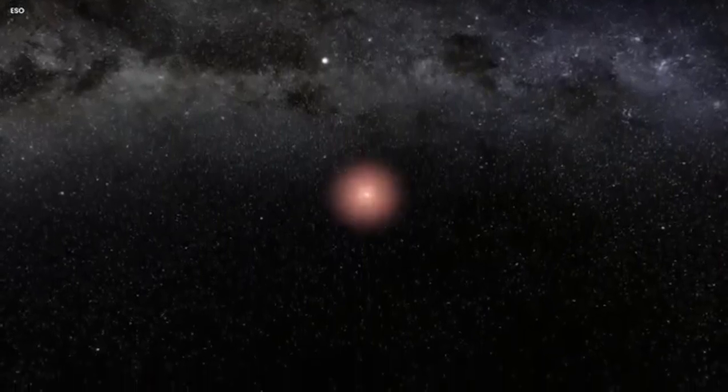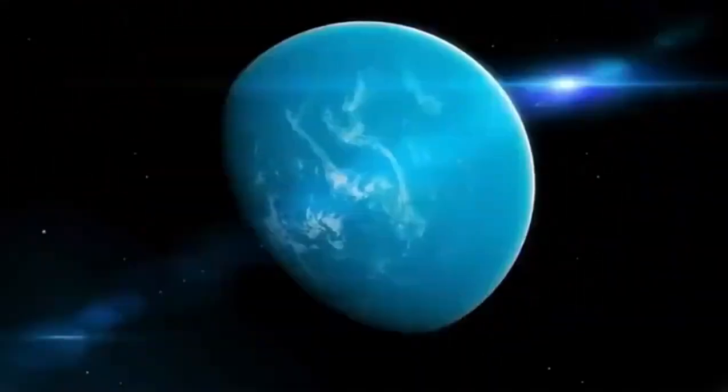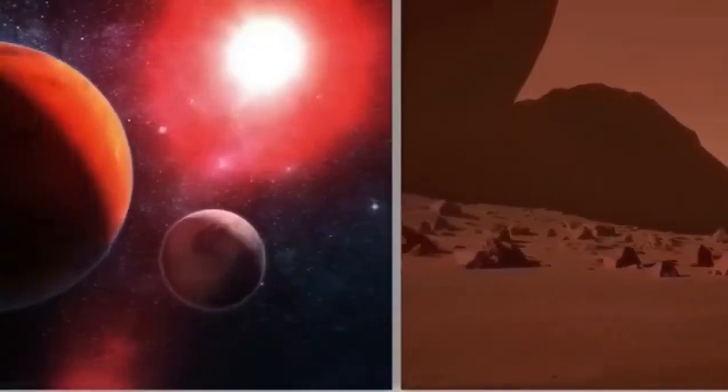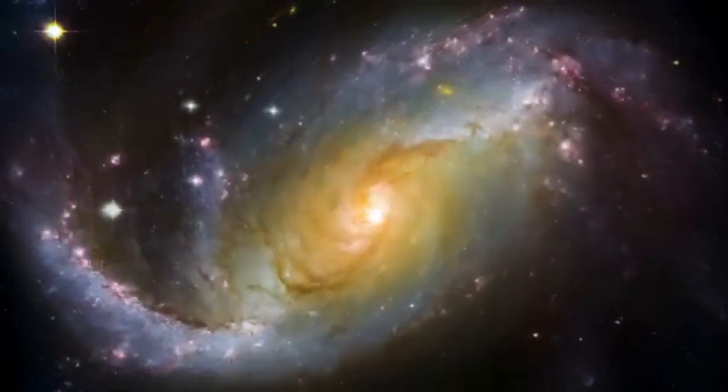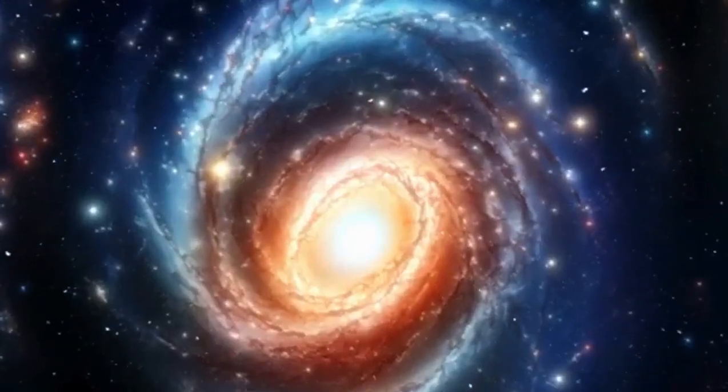Super-Earths are a class of planets that are more massive than Earth, yet lighter than ice giants like Neptune and Uranus. They are truly one of a kind. They can be made up of gas, rock, or even a combination of both, and their sizes can vary from twice the size of Earth all the way to ten times its mass. They really put the super in Super-Earth.